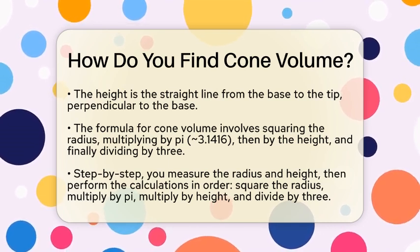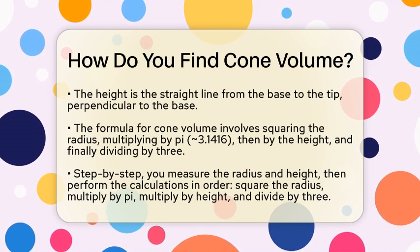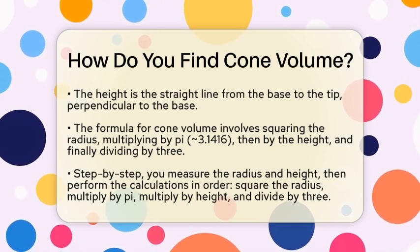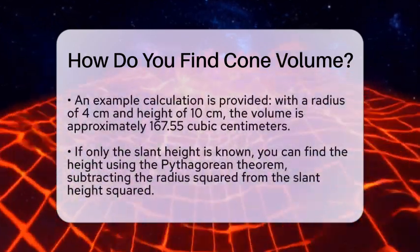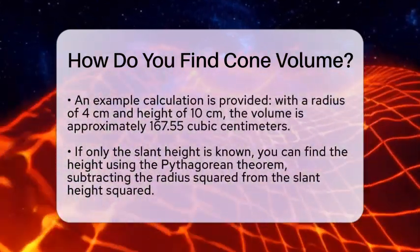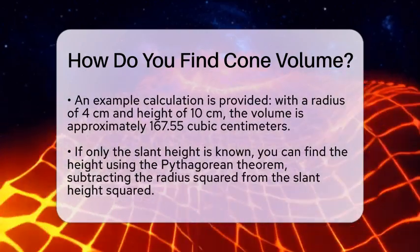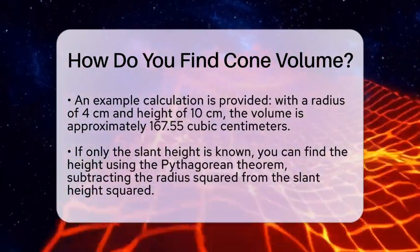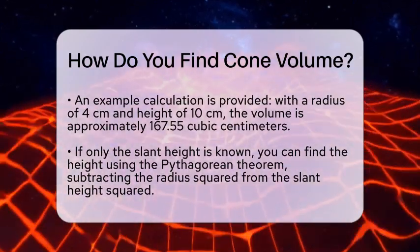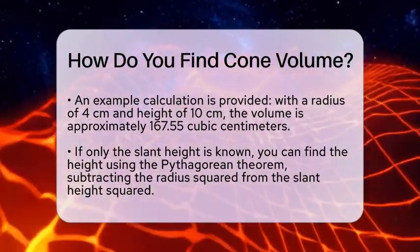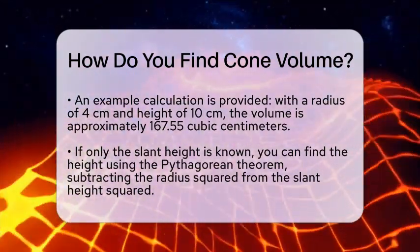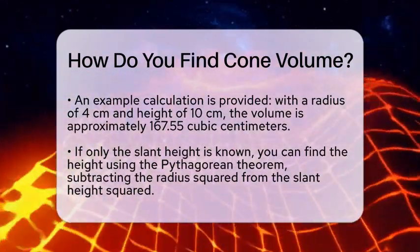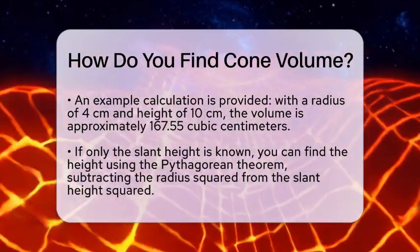Then multiply that by the height. If the height is 10 centimeters, multiply 50.2656 by 10, which equals approximately 502.656. Finally, take that number and divide it by 3. So, 502.656 divided by 3 equals roughly 167.552. That means the cone's volume is about 167.55 cubic centimeters.